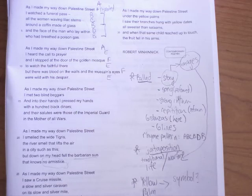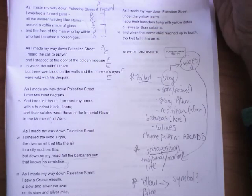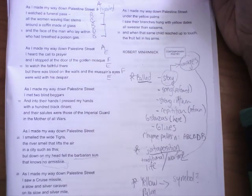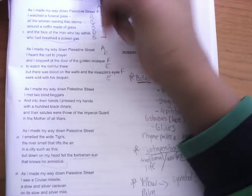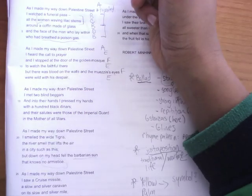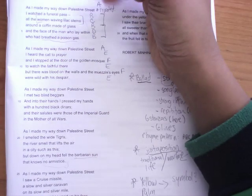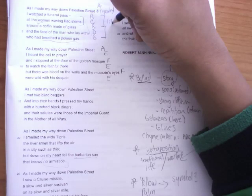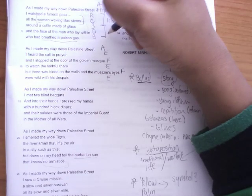The first stanza: I watched a funeral pass, all the women waving lilac stems around a coffin made of glass, and the face of the man who lay within, who had breathed poison gas. I hope you can already get this rhythm, this repetition, the rhyme. But basically what's happened is some man has died from breathing poison gas, and women next to him are waving lilac. So we already get the juxtaposition of flowers and poison in the first stanza.